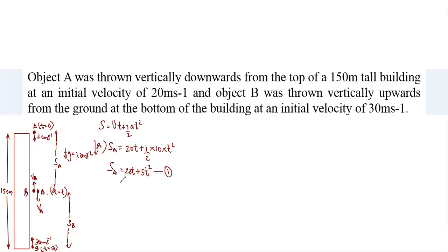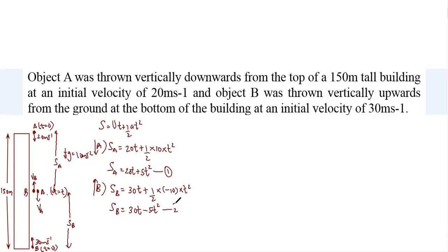For B, apply the equation upwards because B is moving upwards. Displacement of B is sB upwards: initial velocity is 30, time taken until it meets A is t, plus half into acceleration which is minus 10 because I'm applying the equation for B in the upward direction but acceleration is downwards. So sB = 30t − 5t². We know sA + sB = 150, so substituting: 20t + 5t² + 30t − 5t² = 150.